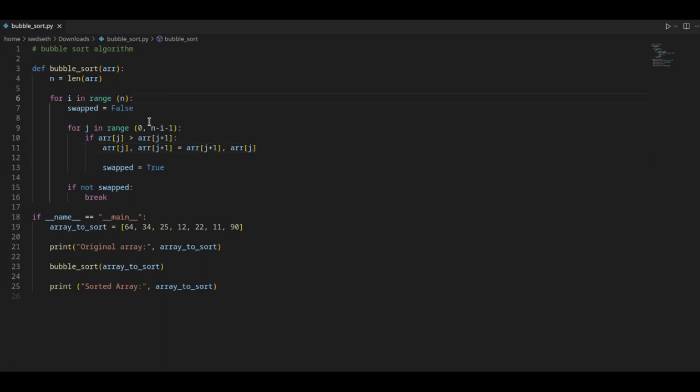Here you can see we have used two for loops, so i runs from 0 to n, and then j also runs from 0 to n. So we'll see how to calculate the complexity of this algorithm.